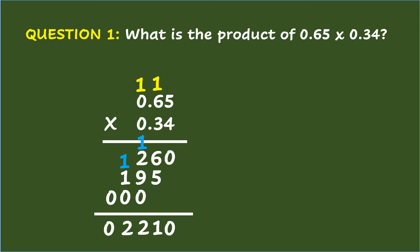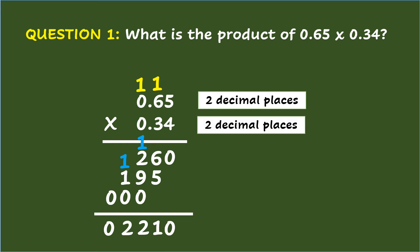Finally, count the decimal places in the first factor — 65 hundredths has 2 decimal places. Count also the decimal places in the second factor — 34 hundredths also has 2 decimal places. So the factors have a total of 4 decimal places. Count 4 decimal places in the product and place the decimal point. The final answer is 2,210 ten-thousandths.